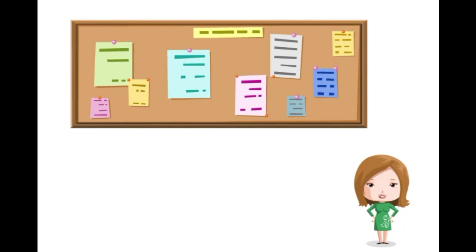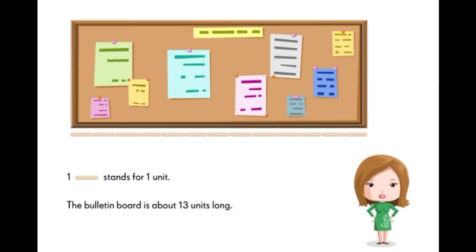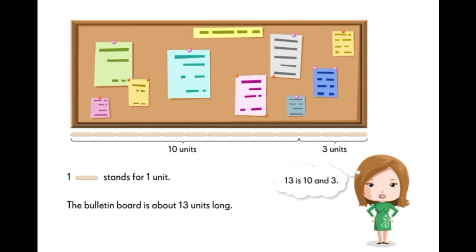Let's use ice cream sticks to measure the length of this board. One, two, three, four, five, six, seven, eight, nine, ten, eleven, twelve, thirteen. One ice cream stick stands for one unit. So the board is about thirteen units long. We can group thirteen into a ten and three. So thirteen is ten and three.